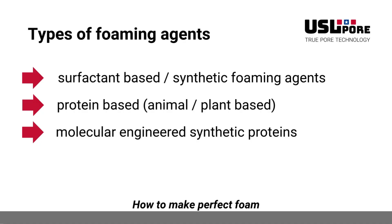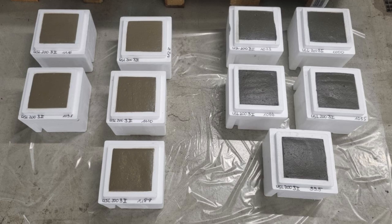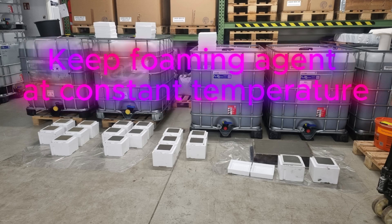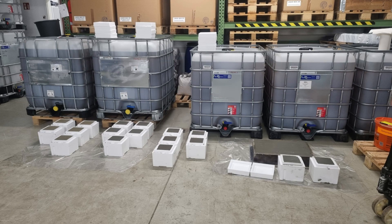USL POUR foaming agents are made of molecular-engineered synthetic proteins with very specific foaming effects. The synthetic protein content is only between 2 and 3%, combining the benefit of not interfering with cement hydration while also granting the high stability of common protein-based foaming agents. Some USL POUR foaming agents are optimized for foam capacity, others for foam stability; some have a liquefying effect, others result in a more viscous foam concrete. The temperature of the foaming agent also influences foam capacity, so we recommend keeping it at a constant temperature of around 20 degrees Celsius (68°F).